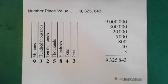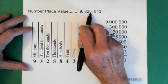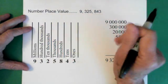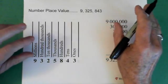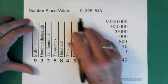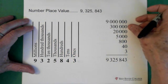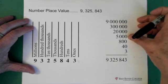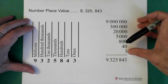Alright, so here we have a really big whole number: 9,325,843. Now what I want to talk about right here is just place value because we need to be thinking about it when we're adding or subtracting whole numbers. When we have this number we essentially have 9,000,000, 300,000, 20,000, 5,000, 800, added to 40, added to 3.